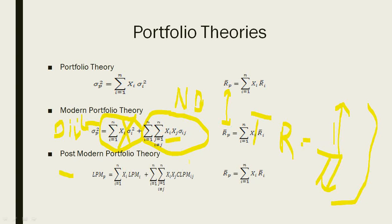This idea was presented by Roy, and in the 1970s, Bawa, and then Bawa and Lindenburg and Fishburg, developed the proxy for downside risk as lower partial moments (LPM). Fishburg, Bawa, and Lindenburg extended that to risk-neutral, risk-taker, and different levels of downside risk, making it more flexible than what Markowitz presented in 1952.